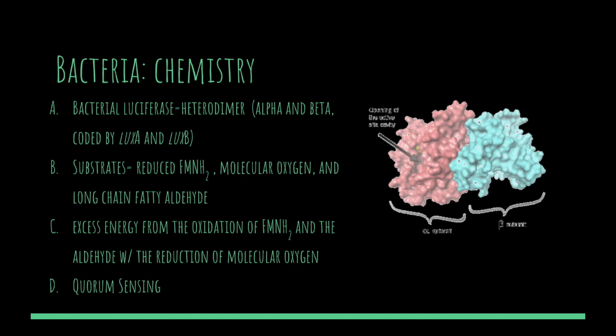Although luminous bacteria have the capability to produce light, not all of them do. Many bacteria express bioluminescence only under certain minimum population conditions — a fascinating form of gene regulation called quorum sensing. This phenomenon is why marine luminescent bacteria that live free in the ocean do not emit light, while those living in a localized or confined environment do. The catalysts that induce expression of the lux CDABE gene are regulatory proteins and a small chemical compound called an autoinducer. Bacteria need a confined, nutrient-rich environment to accumulate autoinducer, and when its concentration reaches a certain level, the luminous system is activated.